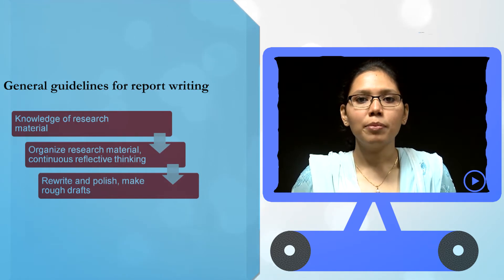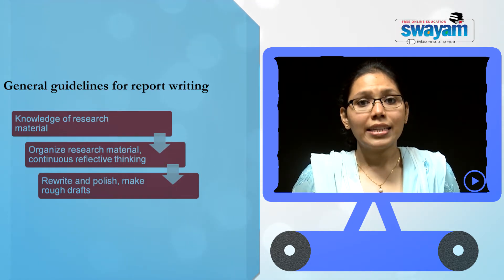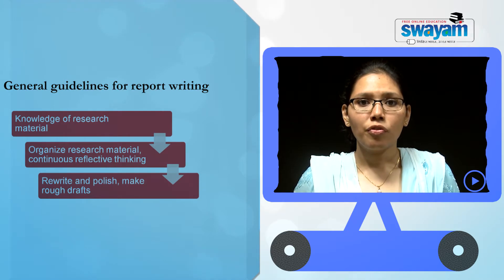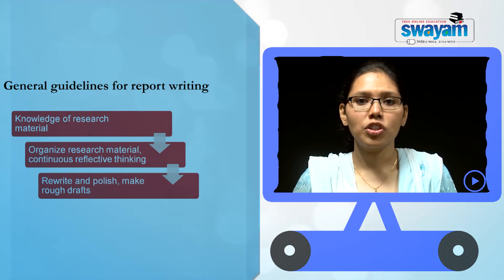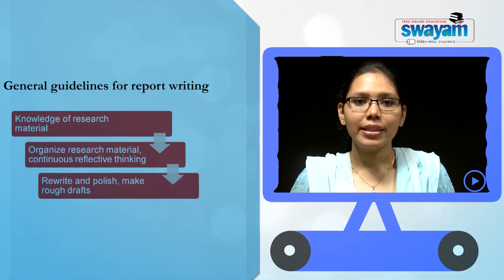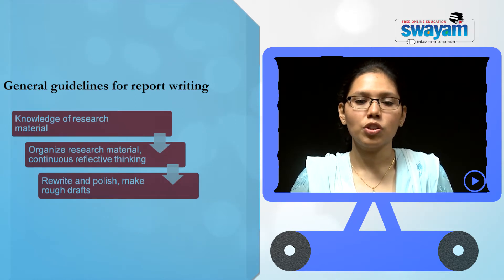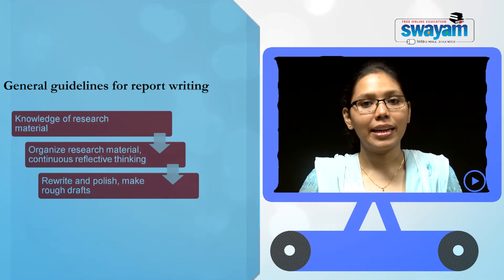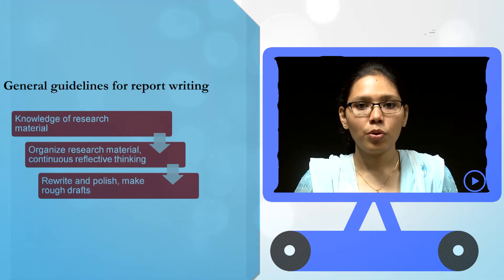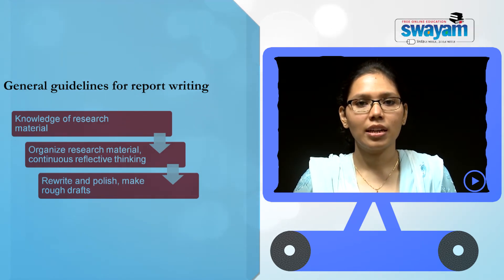Preparation of the final bibliography is essential. From the very beginning of the research, the researcher must maintain a bibliography of the literature read, consulted and incorporated in the research process. This bibliography is generally appended to the research project. It should be arranged alphabetically and be divided into various parts like names of books, articles, reports and legislations consulted.